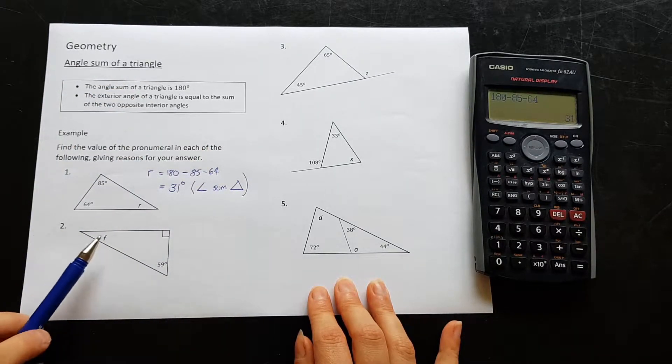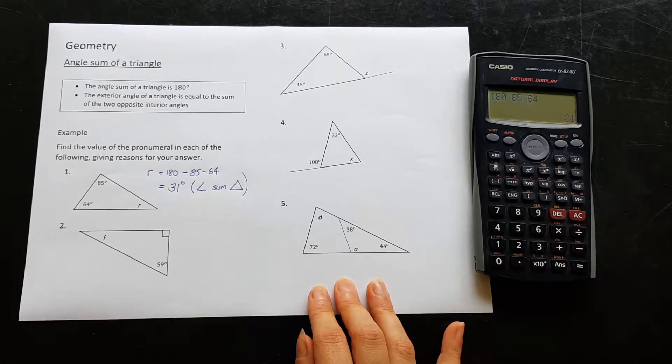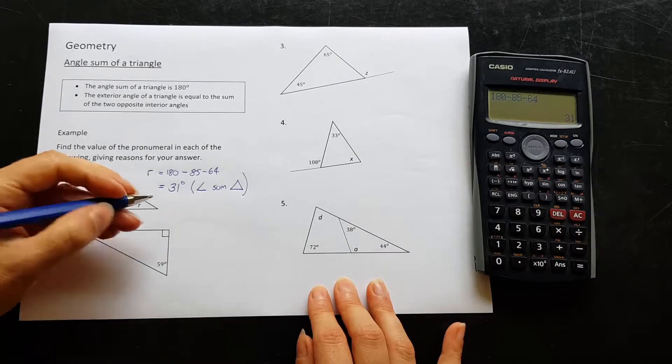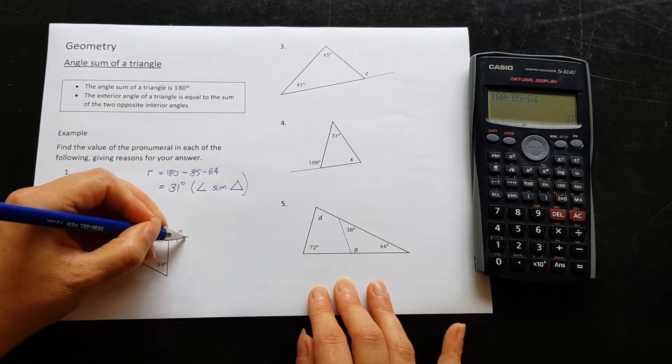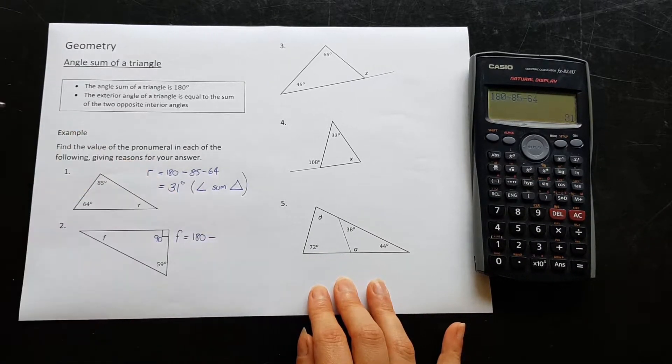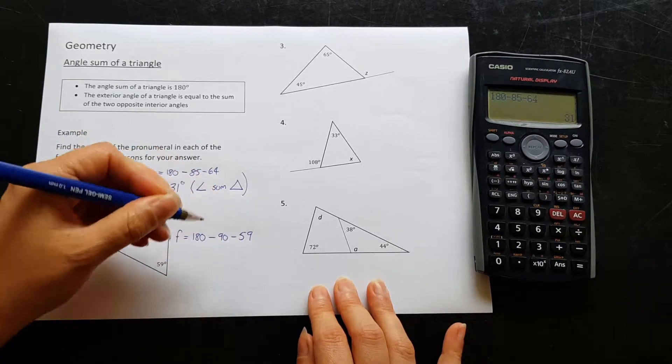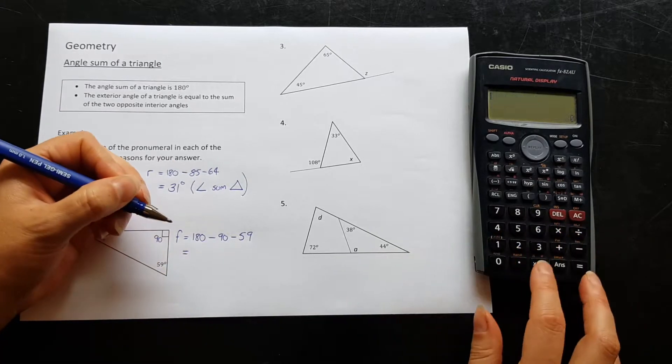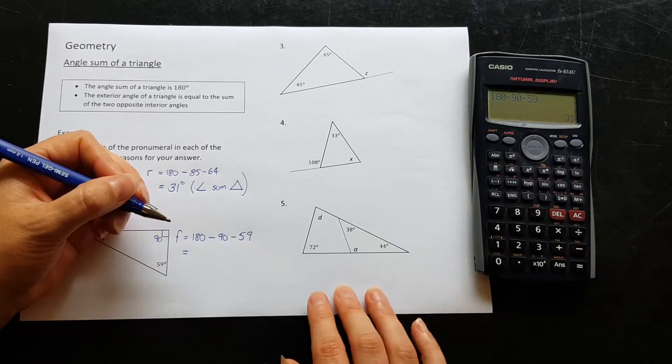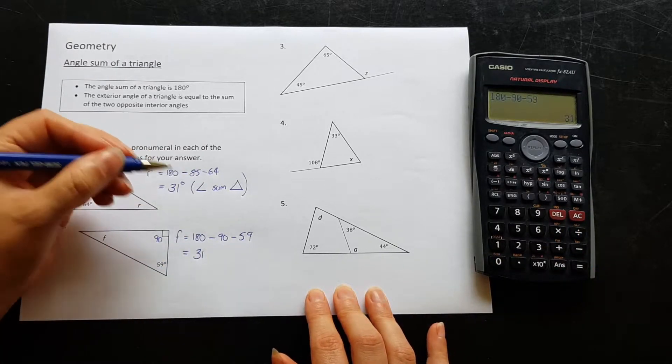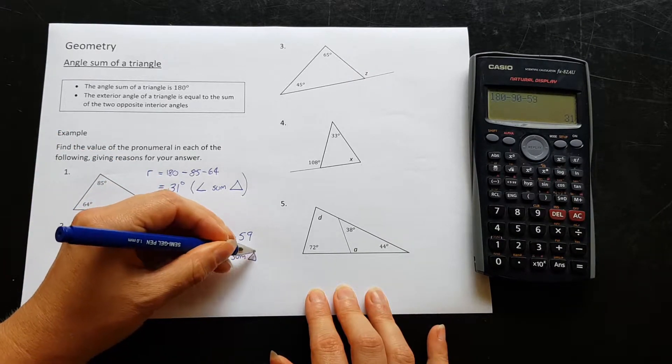Question two, I'm trying to find the value of f, and again I have these two angles. This one doesn't have a number on it, but because we have a right angle symbol there, we know that it's 90 degrees. Okay, so to find f, all I have to do is start with 180 again and subtract off the right angle and the 59. Okay, again with the calculator, 180 minus 90 minus 59 is 31 degrees again. Okay, reason: angle sum of a triangle.